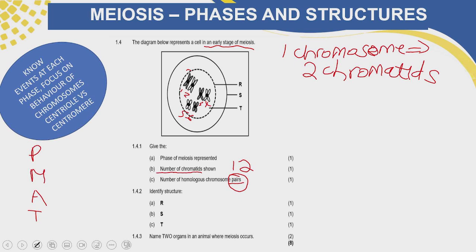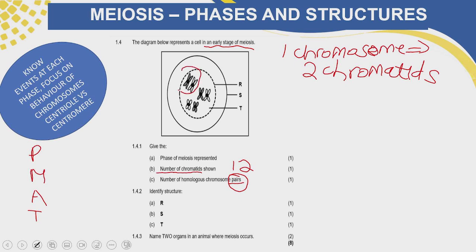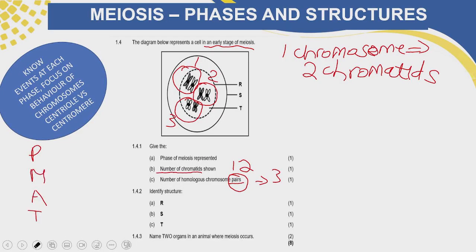When we go to our diagram, this is one chromosome and next to it there is another chromosome, so they make a pair — pair number one. This is another pair — pair number two. And that one is pair number three. So your answer here is three pairs. Learners who gave six did not get the mark because it was asking for the pairs, not the number of homologous chromosomes. So it's very important. Let us look at the next question.